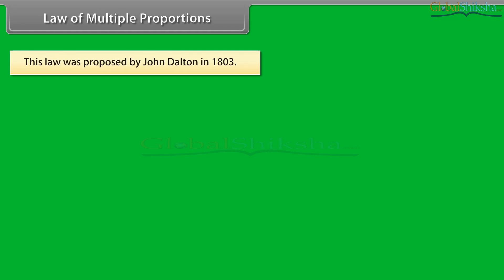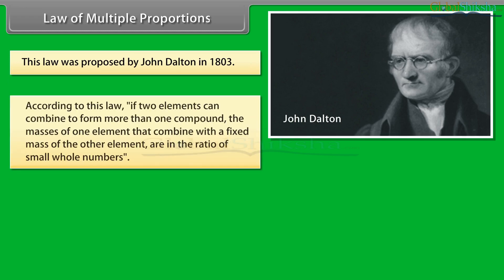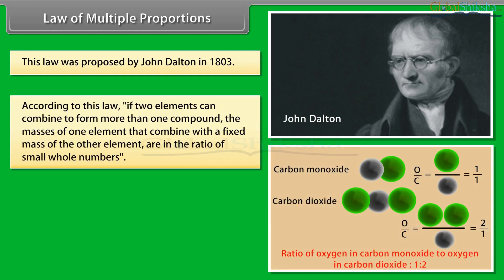Law of multiple proportions: this law was proposed by John Dalton in 1803. According to this law, if two elements can combine to form more than one compound, the masses of one element that combine with a fixed mass of the other element are in the ratio of small whole numbers.